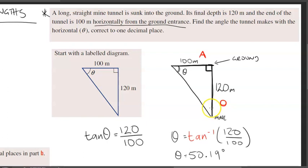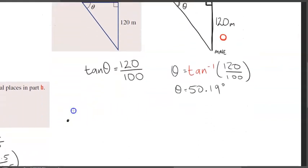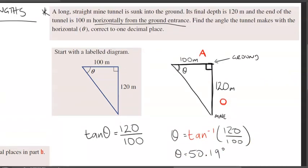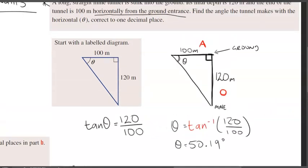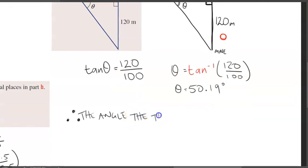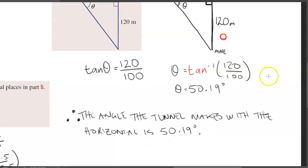Now, because this question has been given in worded format, we have to answer this question in worded format. So, we have our little three dots, which stands for therefore, and therefore just means using the calculations that we have before. Therefore, and we'll just answer it, the angle the tunnel makes with the horizontal is 50.19 degrees. And that's all there is to it.